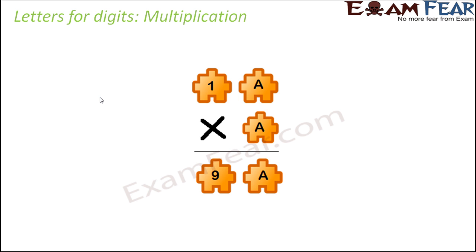We have taken one example: 1a × a = 9a. Here also, your first focus would be on the units place — that is, on this particular column. You have to satisfy this condition: a × a should have a units digit equal to a. So you need a digit which when multiplied by itself gives a result whose units place is the same digit.